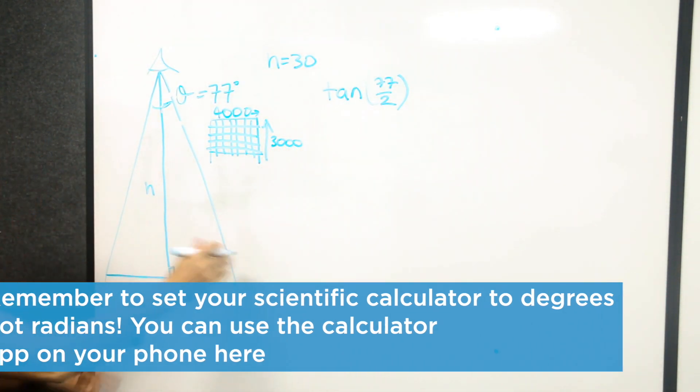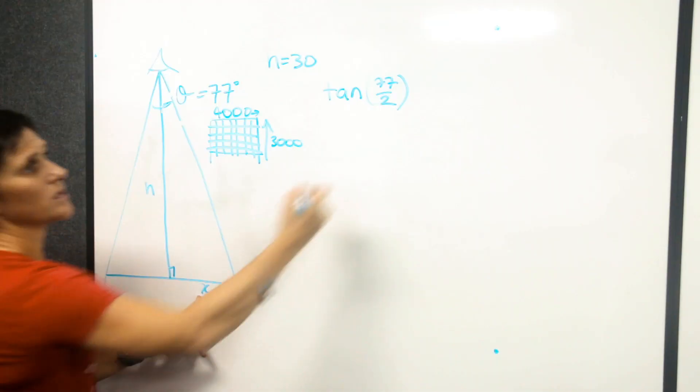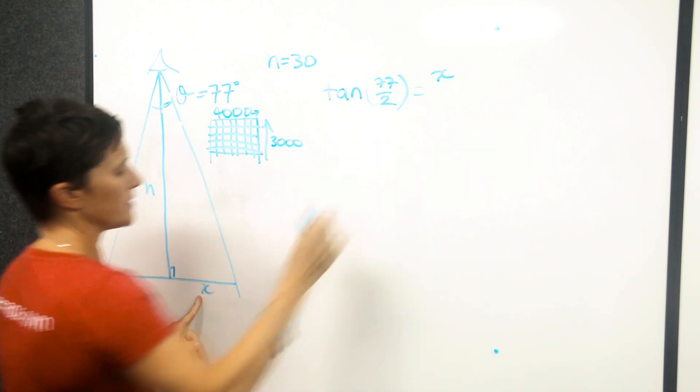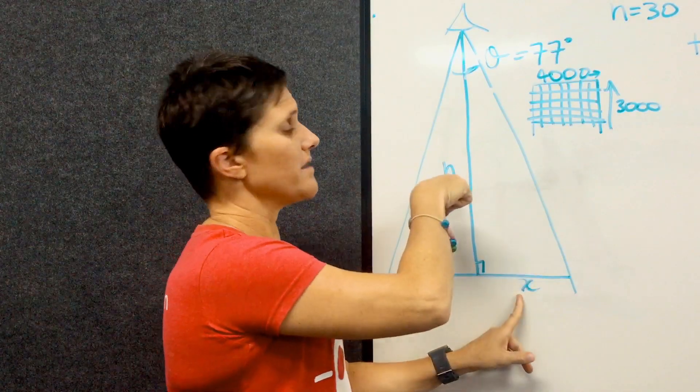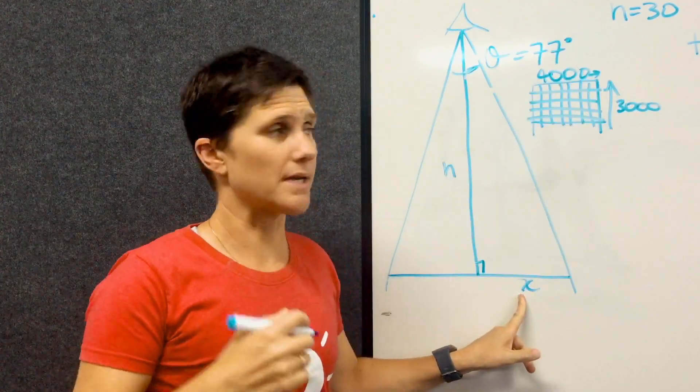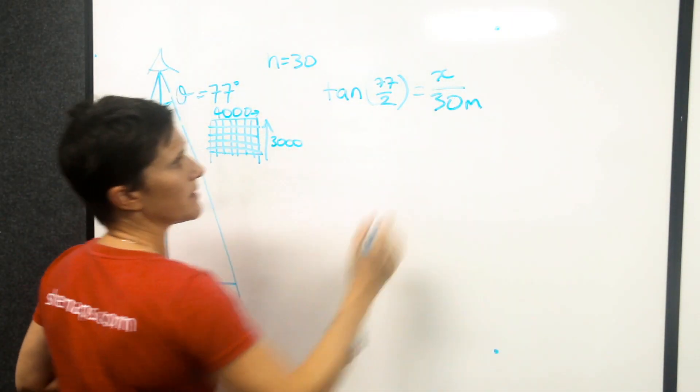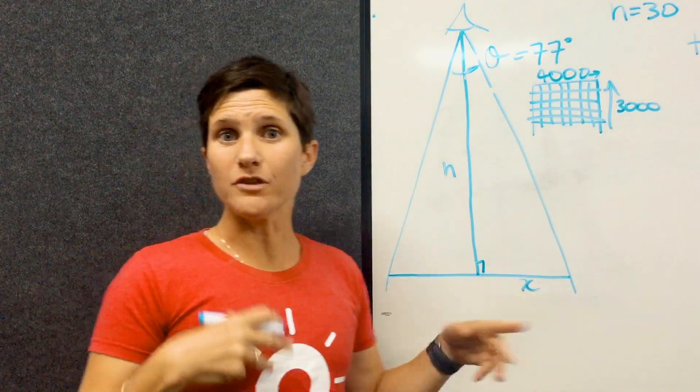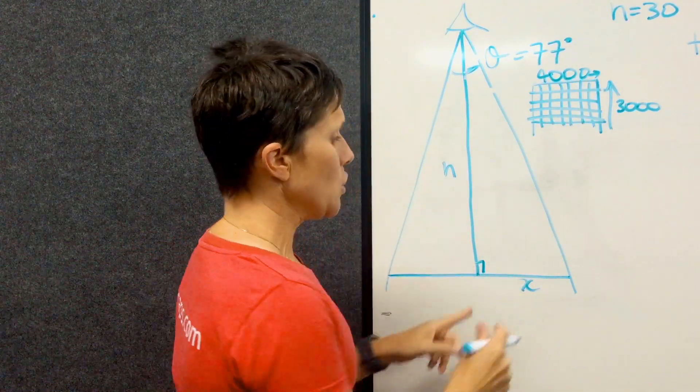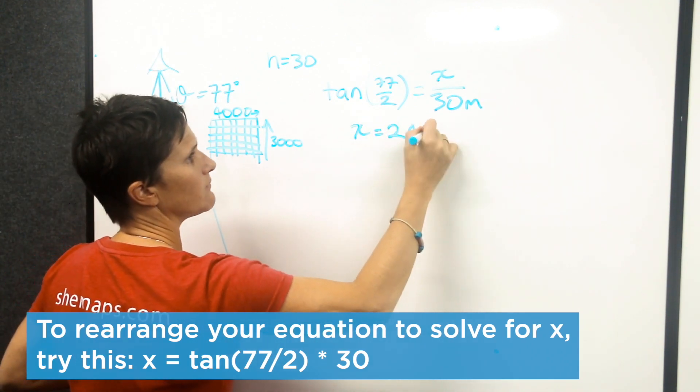So the tan of 77 on 2 equals the opposite, one of the variables that we don't know the answer to here, which is our x, divided by the adjacent, which is h, and I've said let's fly at 30 meters to test this one out. So x over 30 meters there. Now if you work this out on your calculator, you're going to get x as a value of 24 meters.